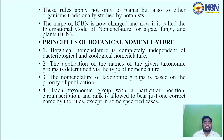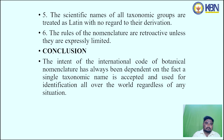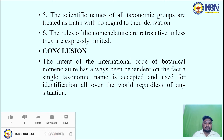These rules apply not only to plants but also to other organisms traditionally studied by botanists. The name ICBN has now been changed and is now called the International Code of Nomenclature for Algae, Fungi and Plants — abbreviated as ICN. The principles of botanical nomenclature state that it is completely independent of zoological nomenclature. The application of names to given taxonomic groups is determined via nomenclatural types, based on the priority of publication. Each taxonomic group is allowed only one correct name, except in specified cases. Scientific names of all taxonomic groups are treated as Latin regardless of their derivation, and the rules of nomenclature are retroactive unless expressly limited.